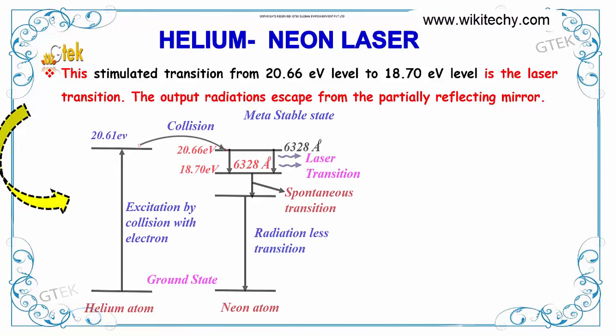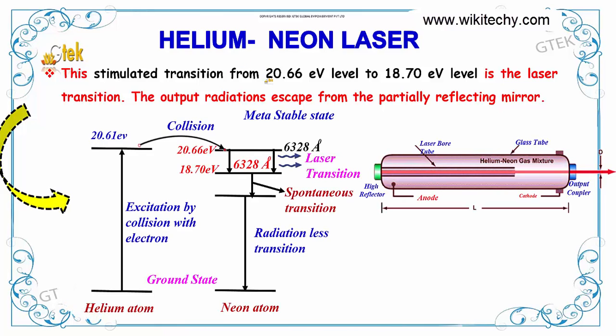This stimulated transition from the 20.66 eV level to the 18.70 eV level is a laser transition. The output radiation escapes from the partially reflecting mirror.